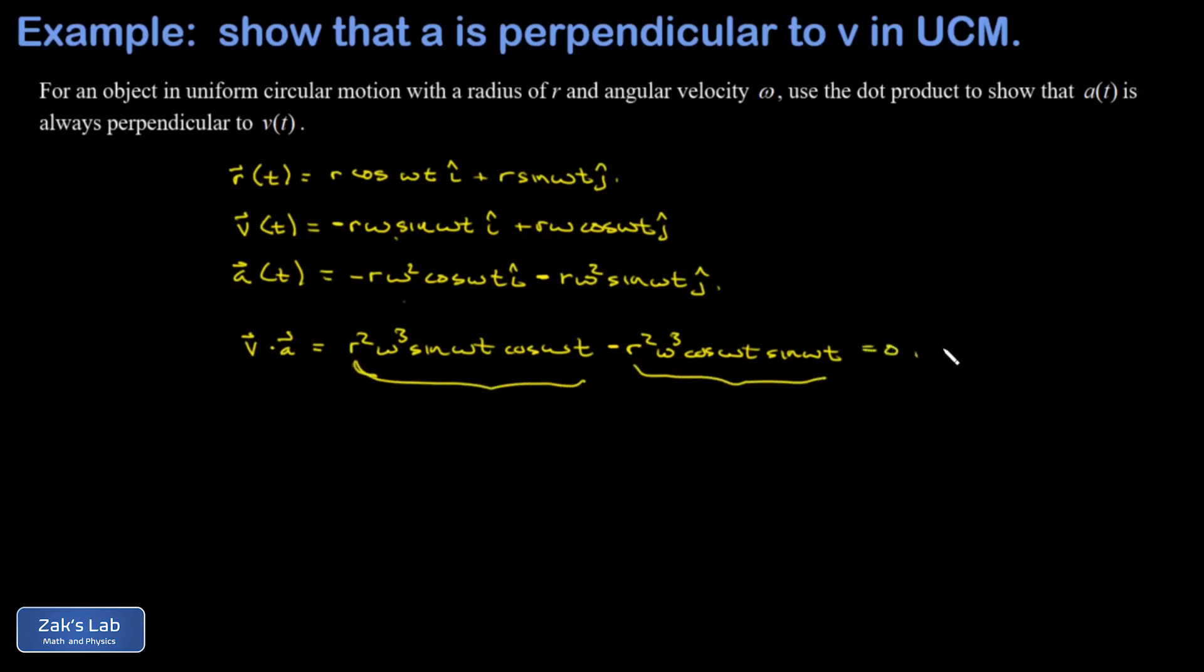And any time the dot product vanishes, you know you're looking at two vectors that are perpendicular, and we're done.